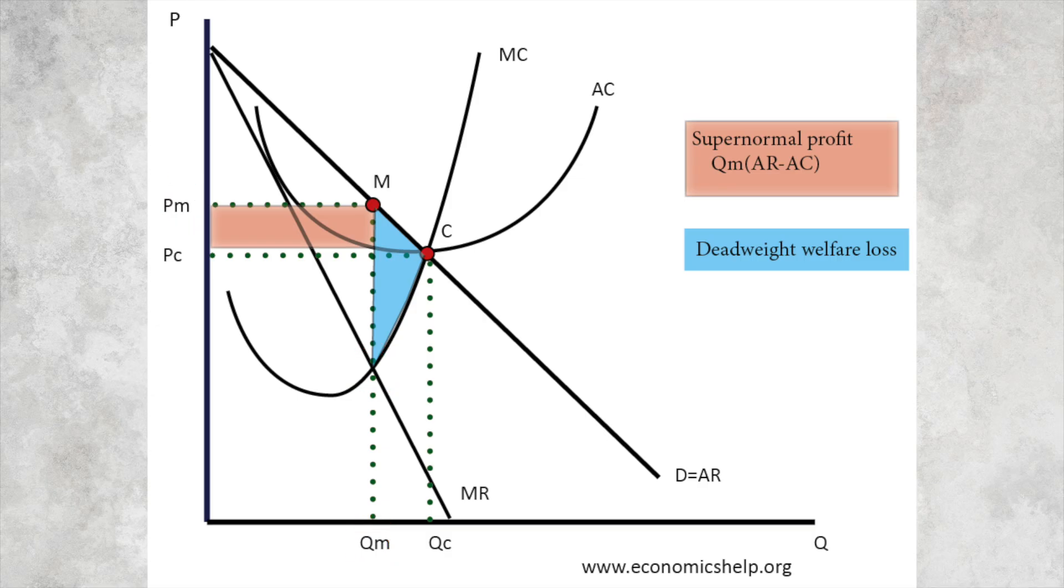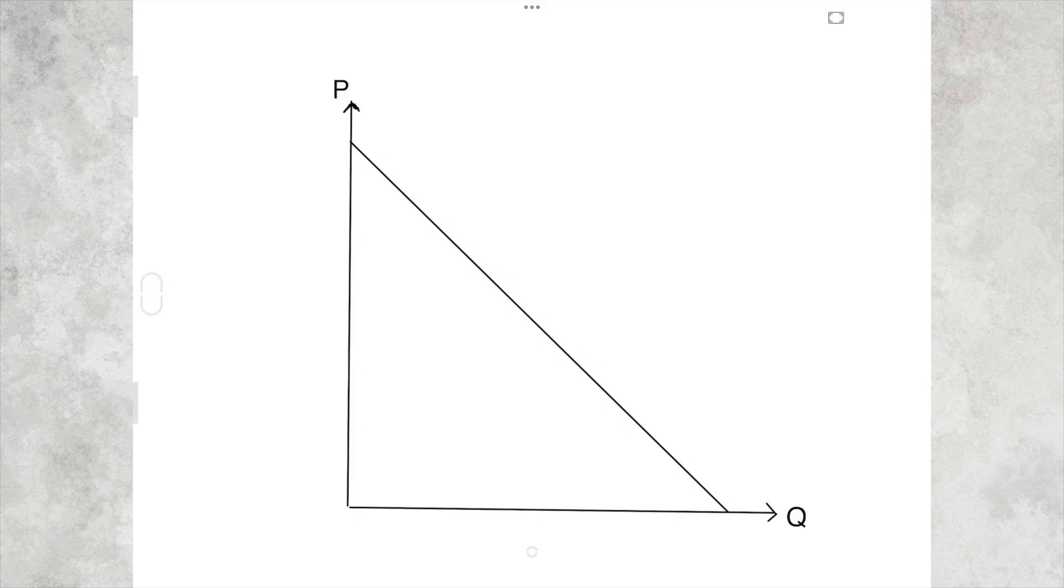Now let's look at how to draw this diagram from scratch. So let us assume that this is the demand curve for the whole industry. Draw a marginal cost curve which looks something like this, and we're also going to draw an average cost curve. And let us assume that this industry, to start off with, is competitive. And if it's competitive, then we'll have that output and that price. Why? Well, because here average revenue equals average cost, and that is normal profit.